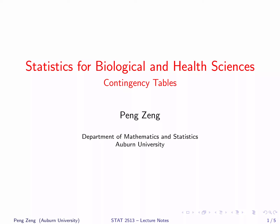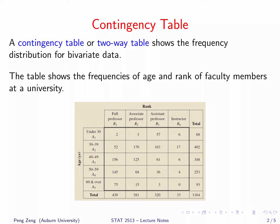This class discusses contingency tables. A contingency table, or two-way table, shows the frequency distribution for bivariate data. We have a contingency table in this slide, which is constructed based on a sample of 1164 faculty members in a university.